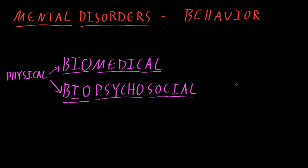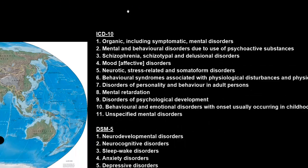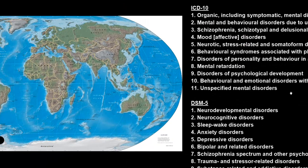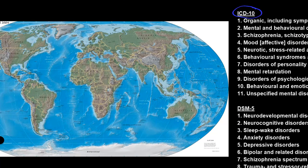As of 2014, when I'm making this video, there are two classification systems most commonly used for mental disorders: the ICD-10 and the DSM-5. The ICD-10 is short for the International Classification of Diseases, Tenth Revision, and this is a system from the World Health Organization (WHO), which is headquartered in Europe.